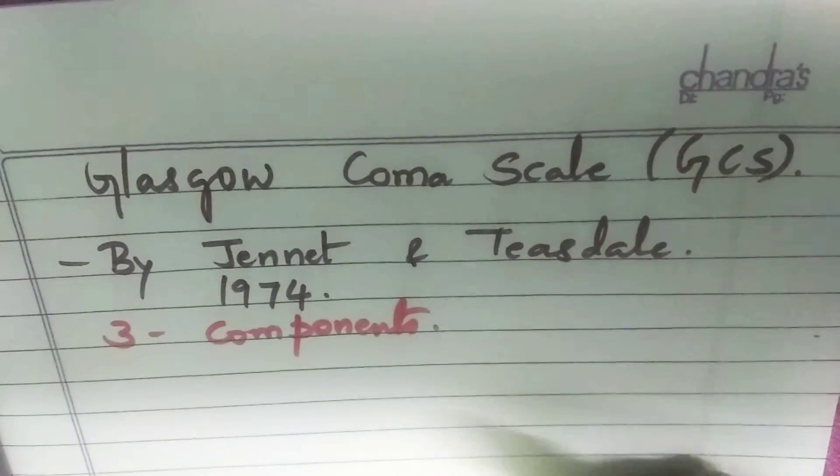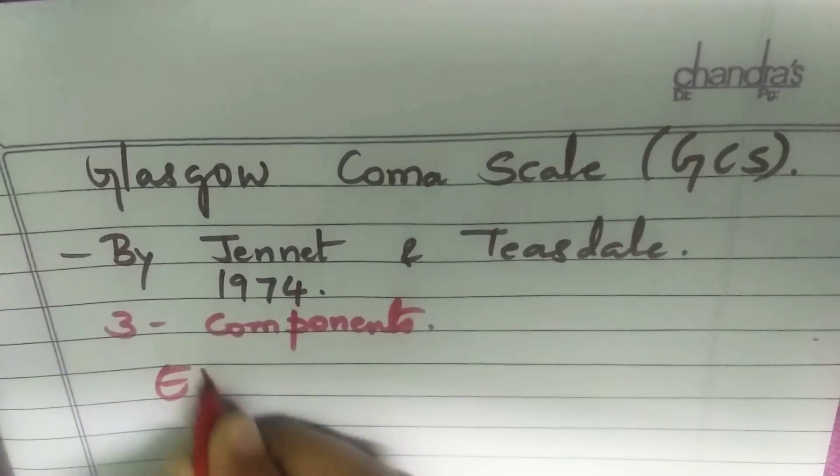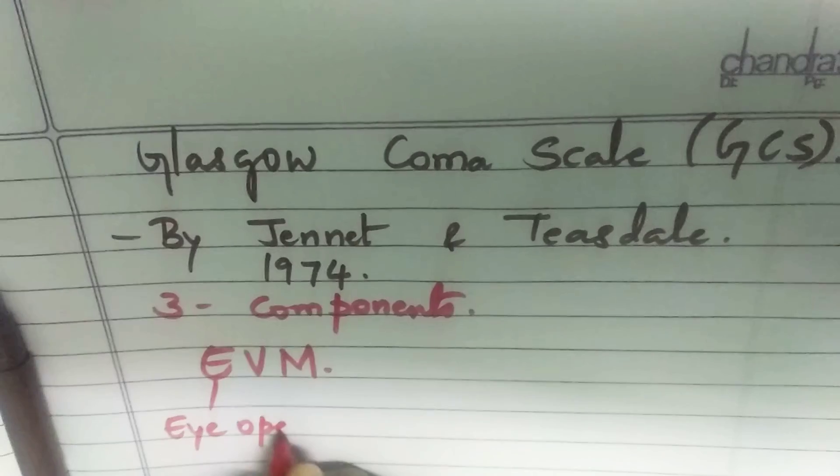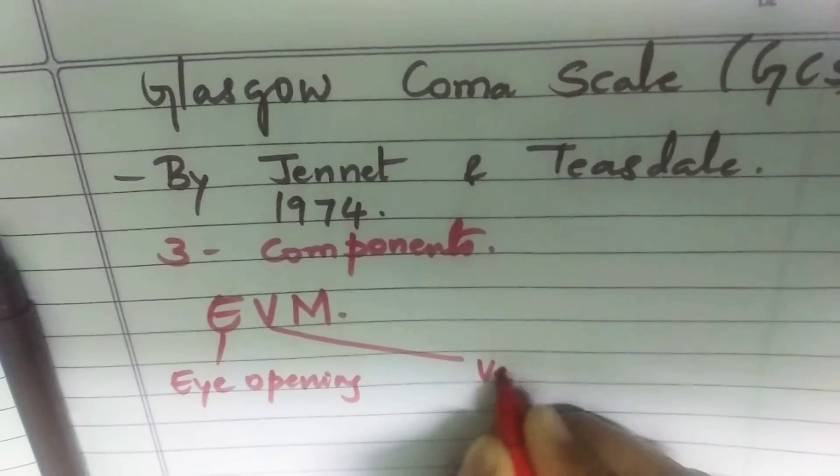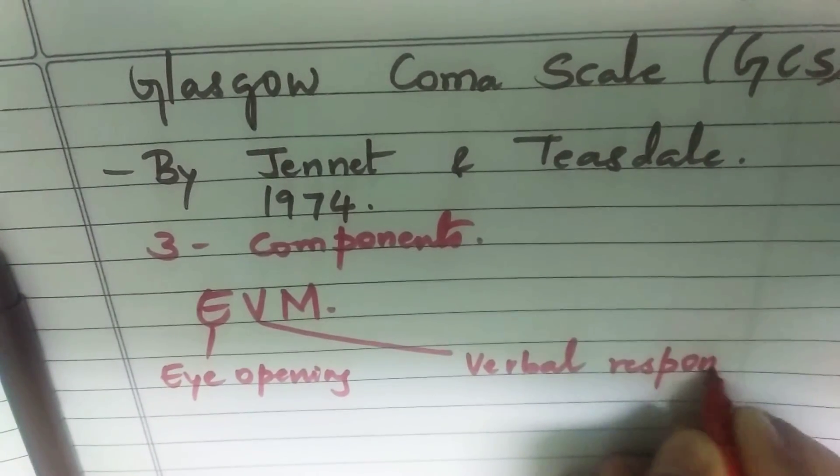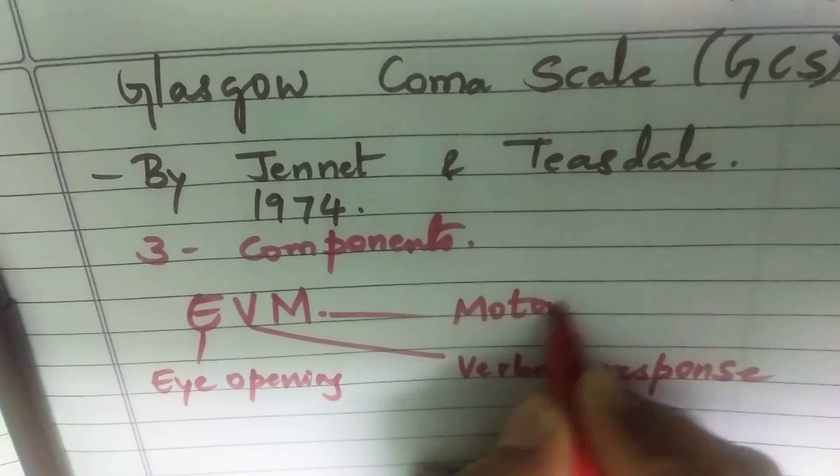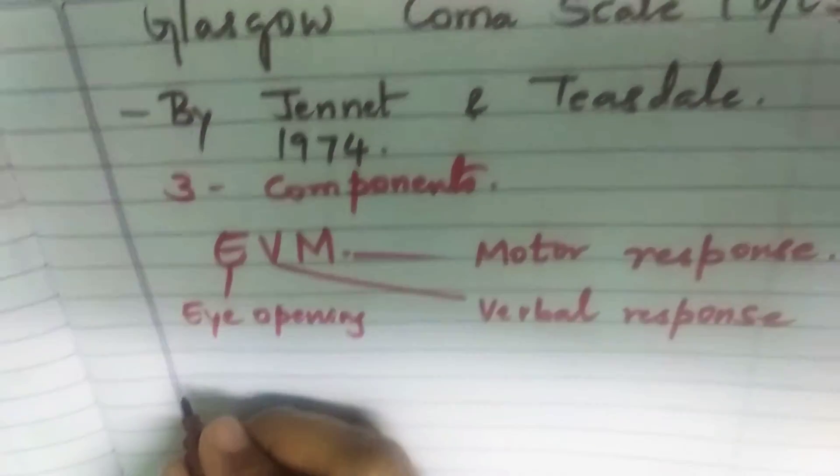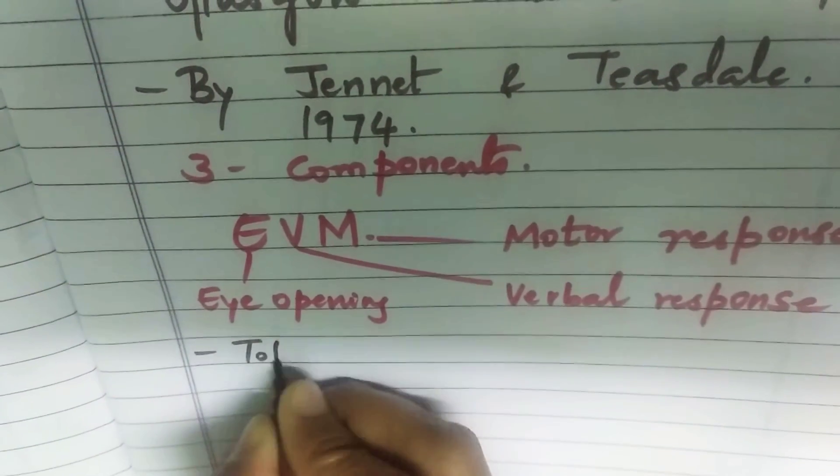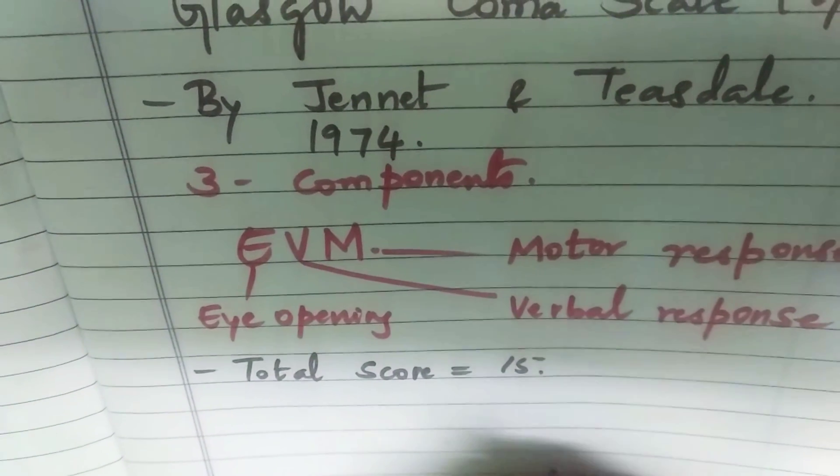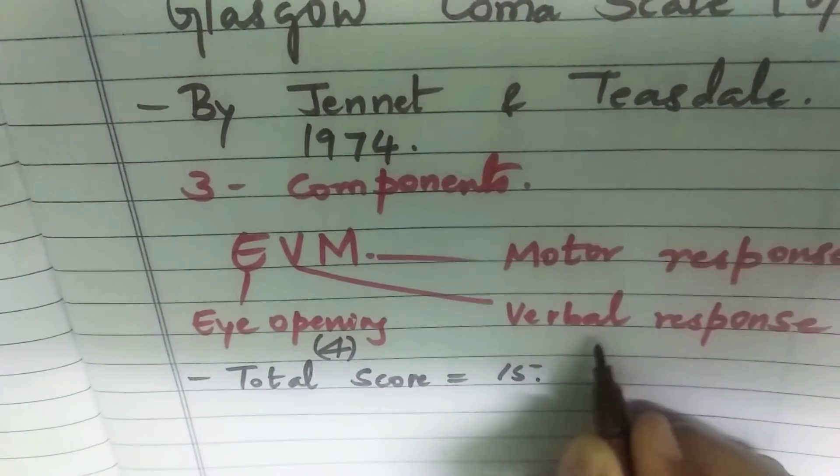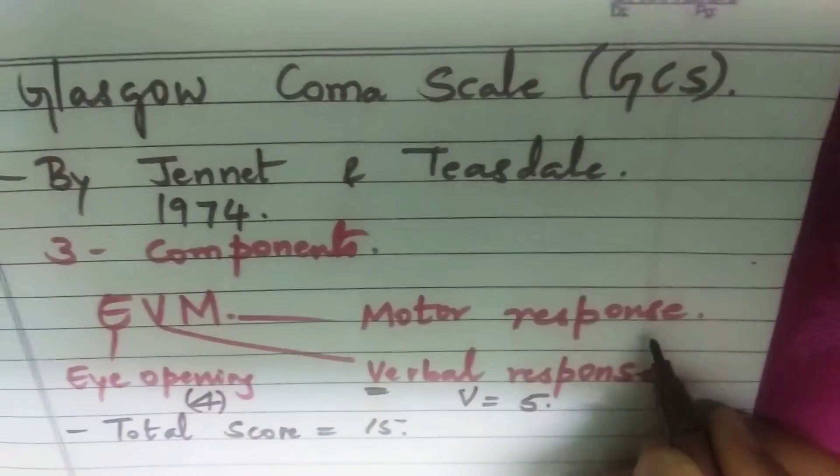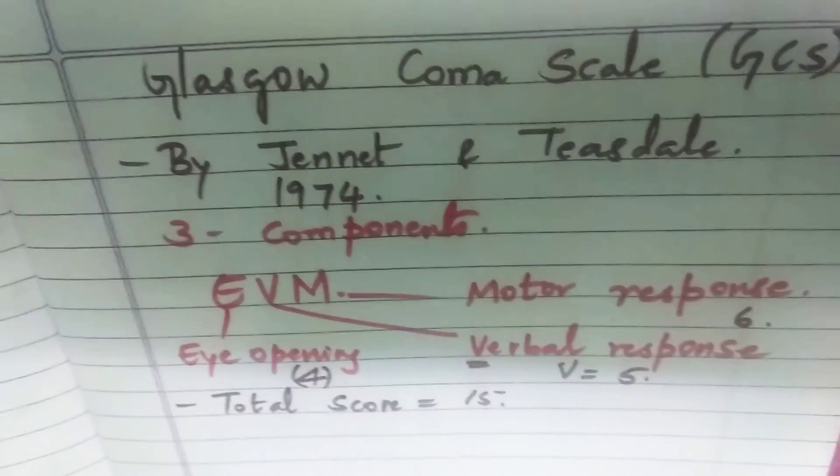And it has got three components in the Glasgow Coma Scale. Remember friends, electronic voting machine? Yes, EVM. So E is for eye opening, V is for verbal response, and M is for motor response. In the GCS we have a scoring system. The total score is fifteen. Among the fifteen, for eye opening we give four, for verbal since it is V we give five, and for the motor to make it a total it is six.